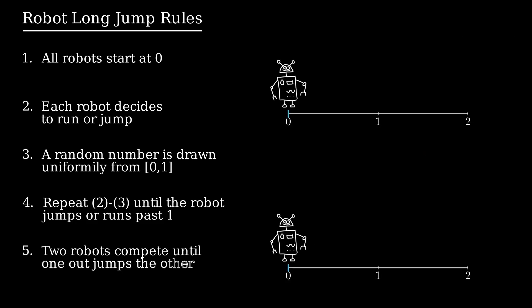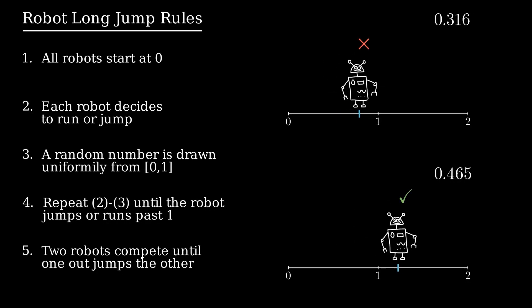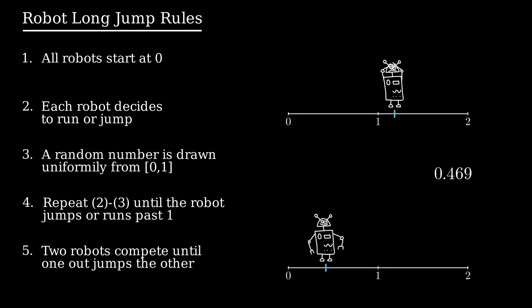A full match consists of two robots performing a long jump independently. Then, whoever jumps further wins. If both robots fault, then both robots move back to zero and perform another jump. This is repeated until someone out jumps the other.